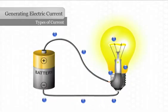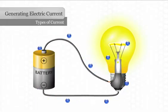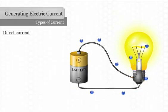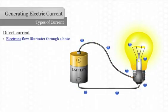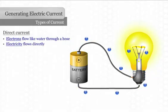Earlier in the lesson, we looked at an electric circuit with a D-cell battery and a light bulb that used direct current. With direct current, electrons flow through a wire much like water flows through a hose. The electricity flows directly through the entire circuit.